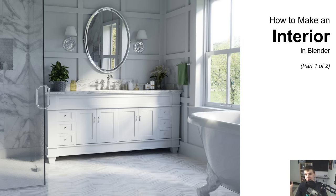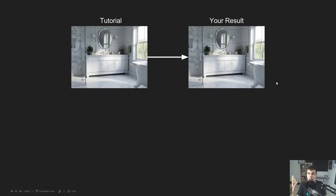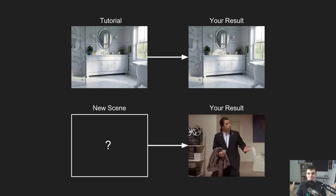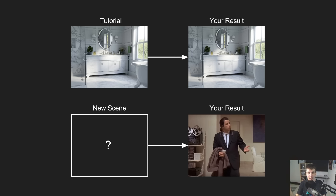Before we get into it, I want to talk about the architectural concept. When you think about making an interior scene like this, if you just follow a tutorial right to the end and get the result, you might think you know how to do interiors. But then when you start a new scene, what do you do? Because you followed a paint-by-numbers tutorial — you got the exact measurements, you followed steps to put the window there. But what do you do if you want to make a completely new scene? Where do you start? Do you start with a photo, sketching things out, or a floor plan? It's something a lot of tutorials miss.